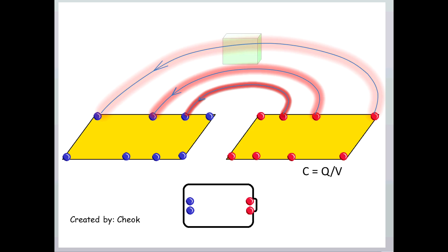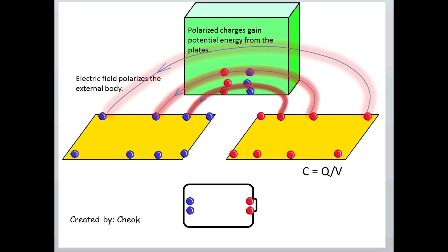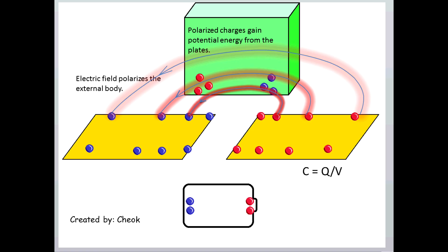When an external conductor is put nearby, it cuts into the electric field. The electric field polarizes the conductor and energy is transferred to the polarized charges.